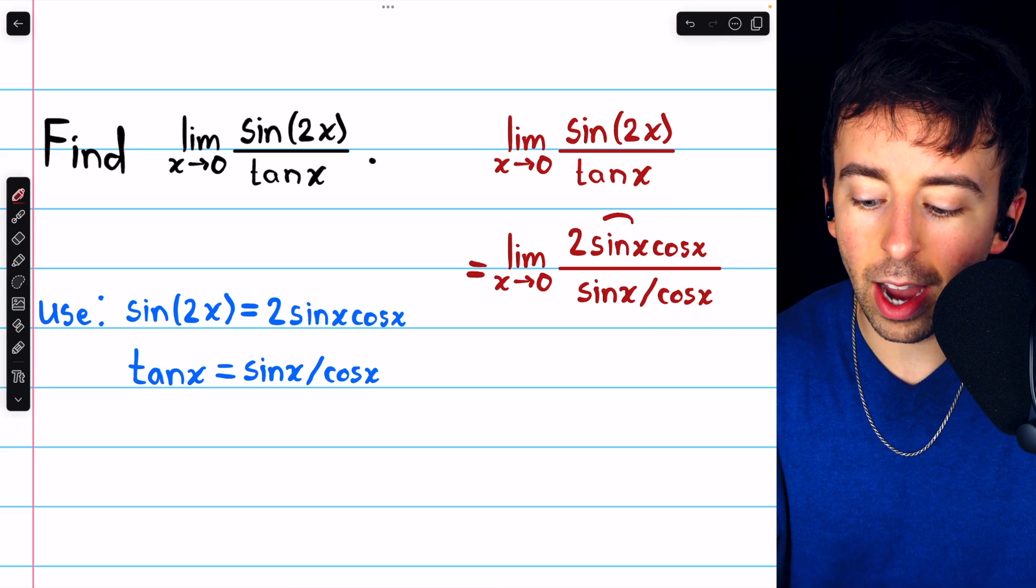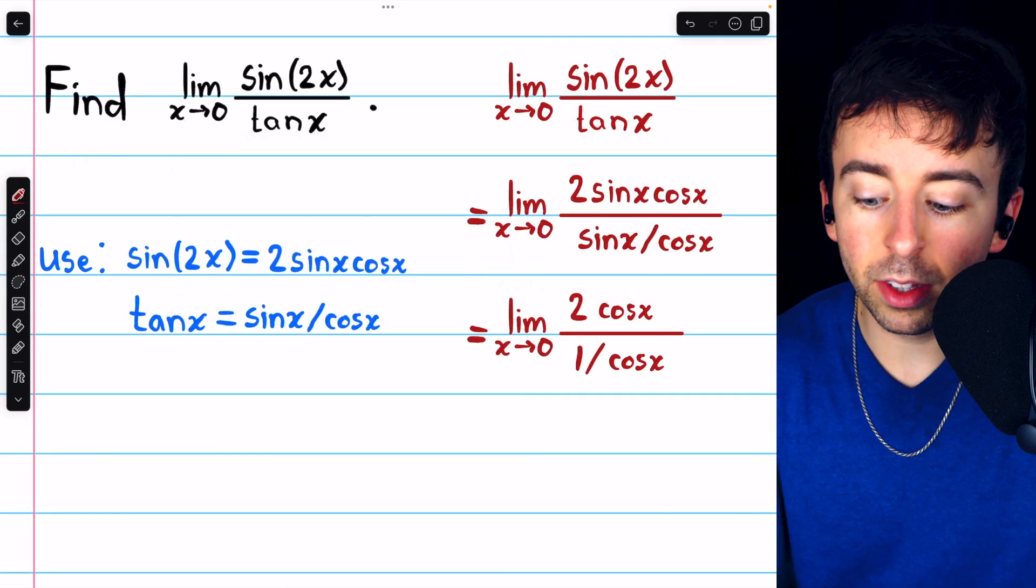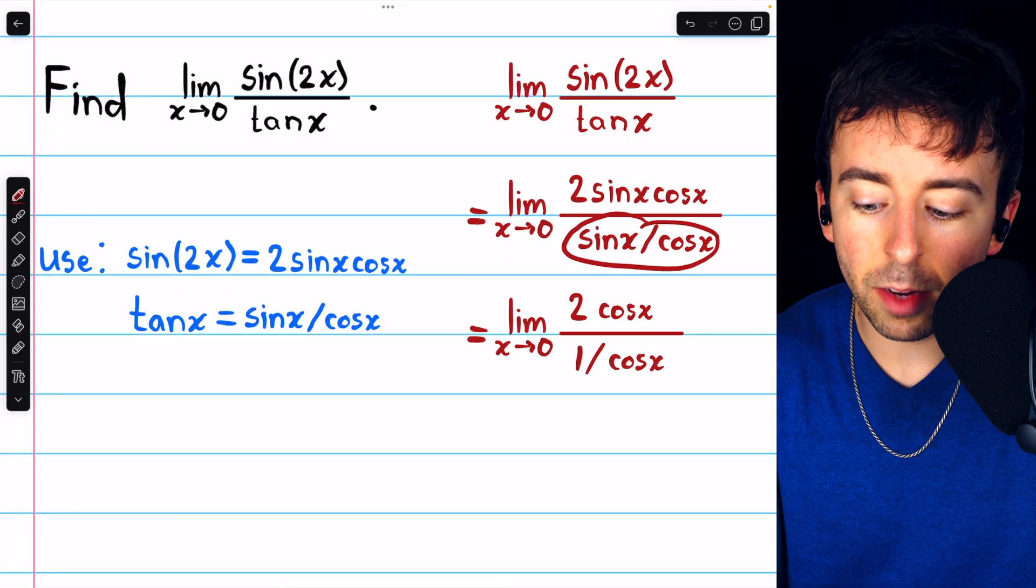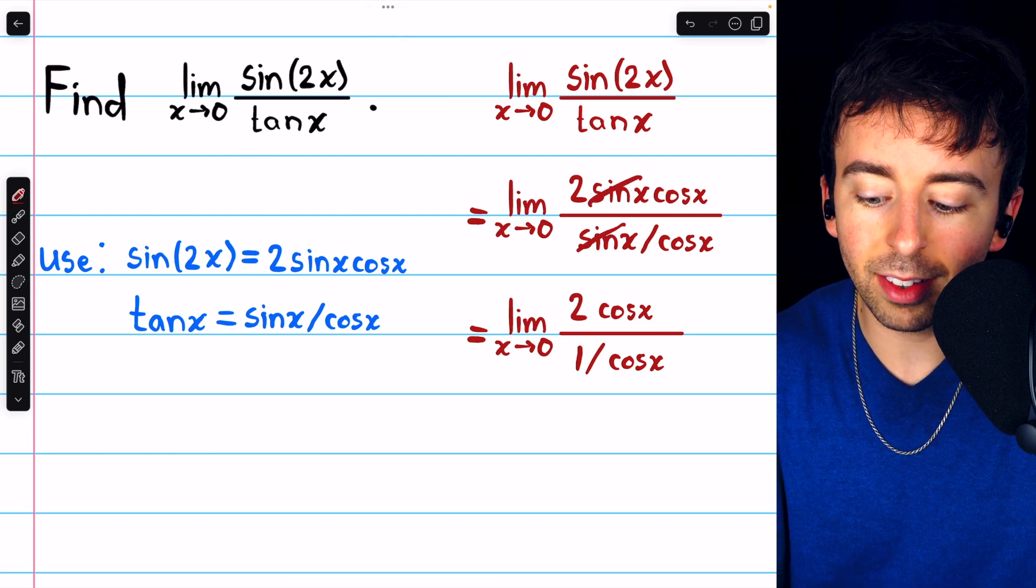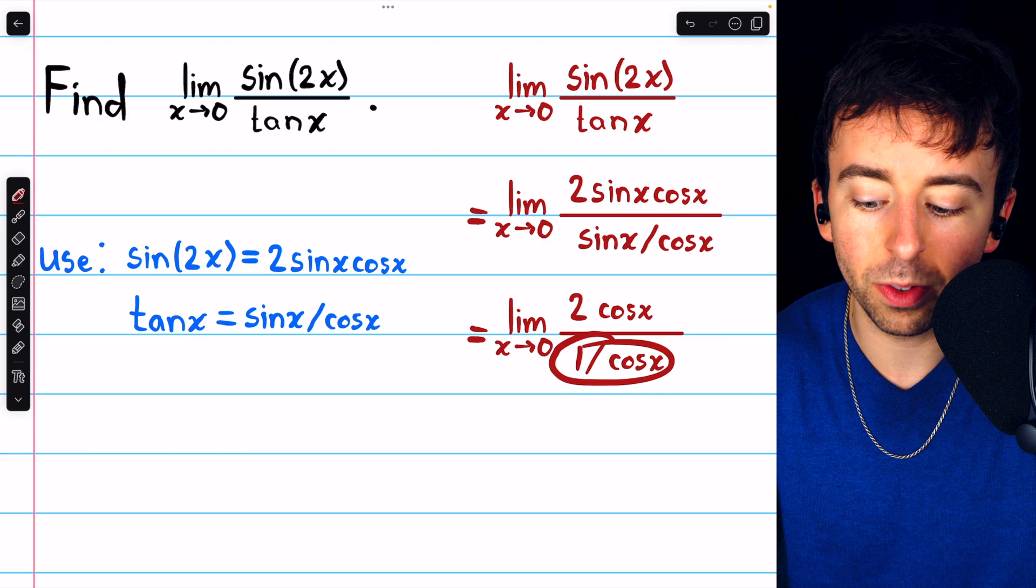Now we have sine in the numerator and sine in the denominator and those will cancel out. Remember in the denominator, it's sine x divided by cosine x, so once we cancel out those sines, in the denominator we have 1 over cosine x.